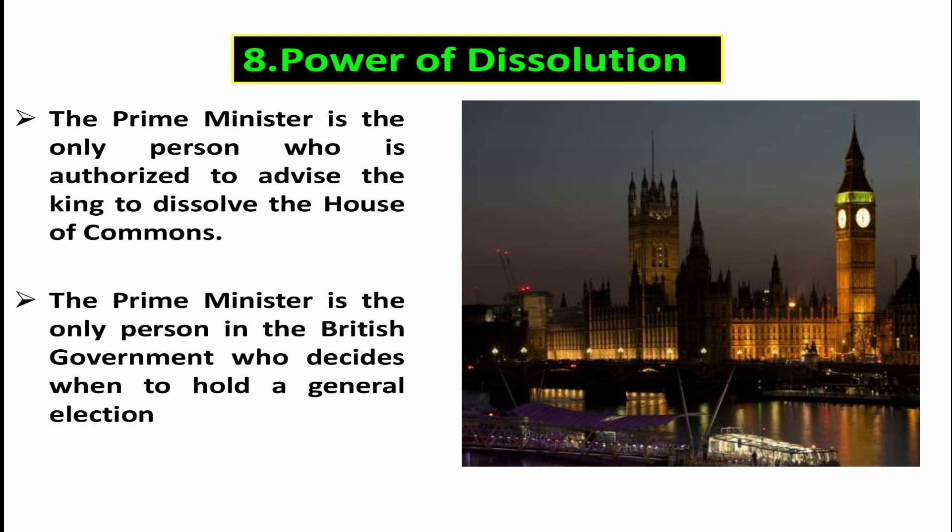Number eight, power of dissolution. The Prime Minister is the only person who is authorized to advise the King to dissolve the House of Commons. The Prime Minister should consult the cabinet on the issue of dissolution. Moreover, the Prime Minister is the only person in the British government who decides when to hold a general election — that is, to dissolve parliament and to go to the polls.